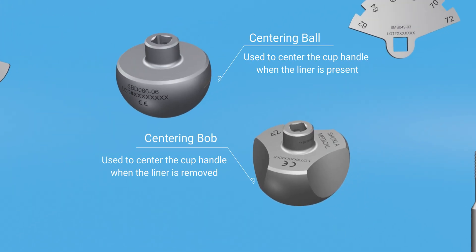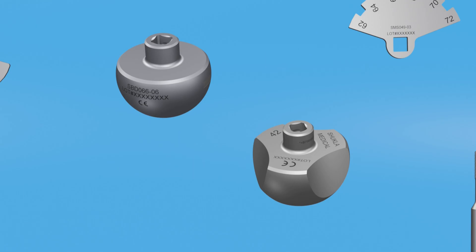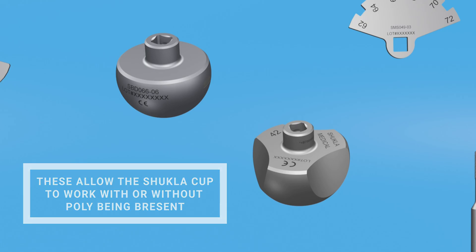Centering balls and bobs align the cup handle for proper blade placement around the acetabular cup. This allows it to be used with or without poly.